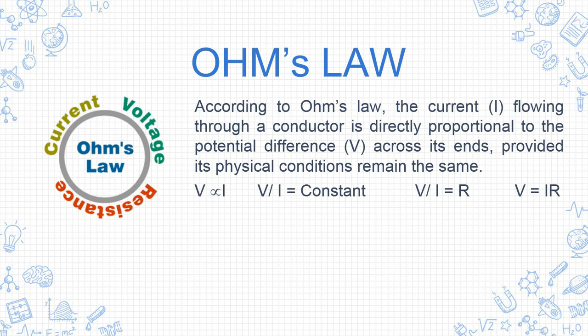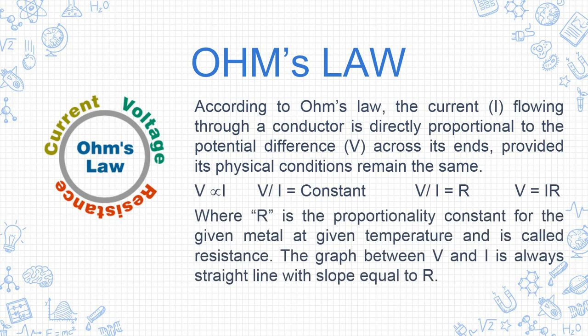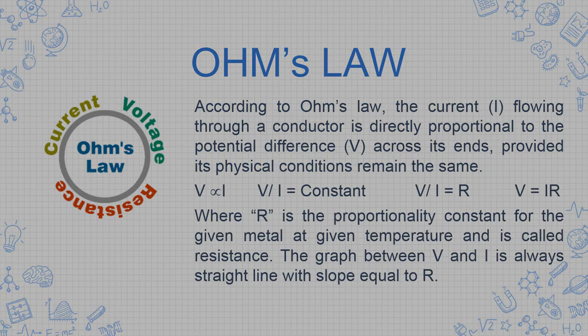He discovered a relationship between V and I: V is directly proportional to I, so V upon I is equal to a constant. That constant is capital R. According to Ohm's law, V is equal to IR. This is the formula for Ohm's law: V = IR.